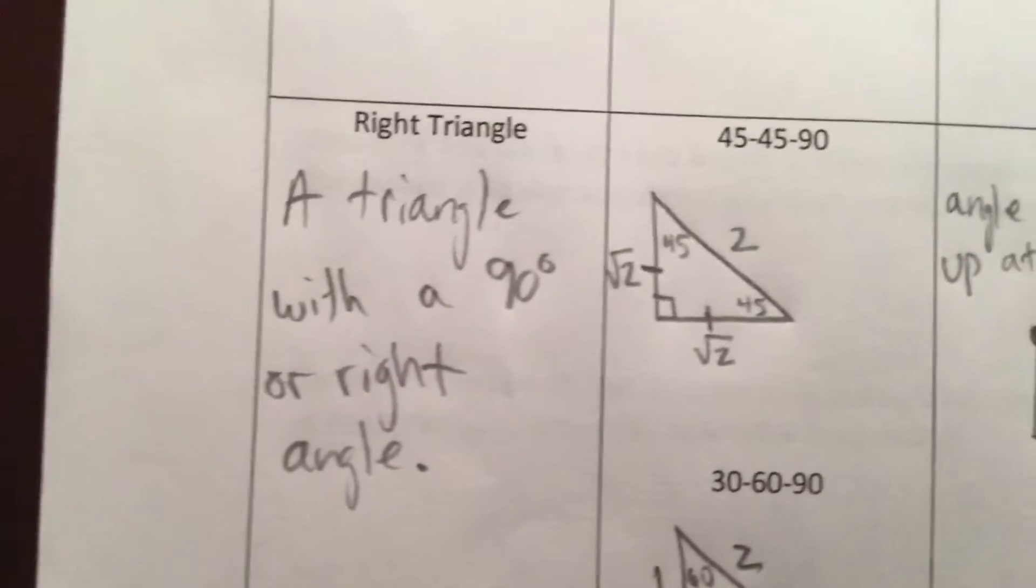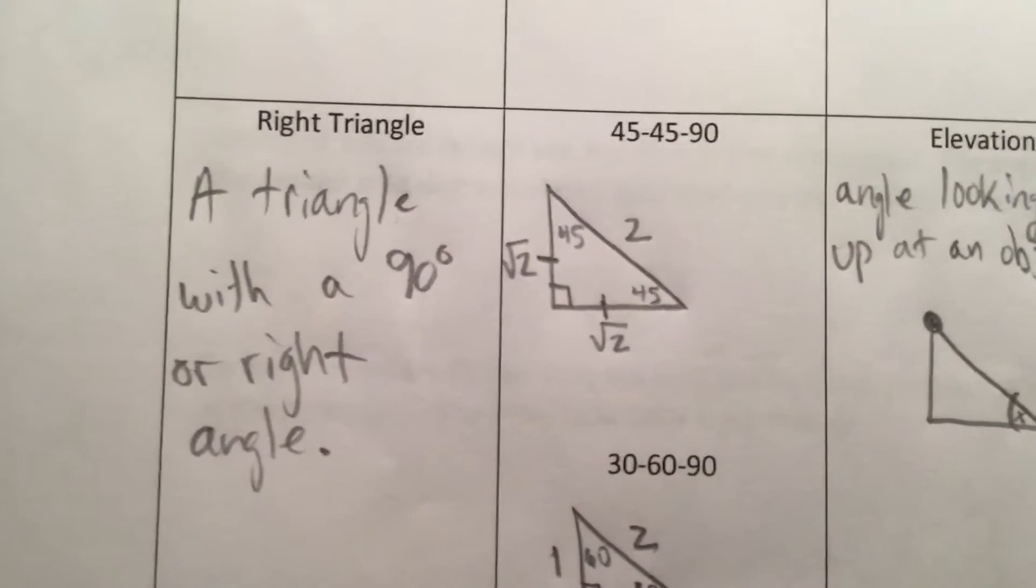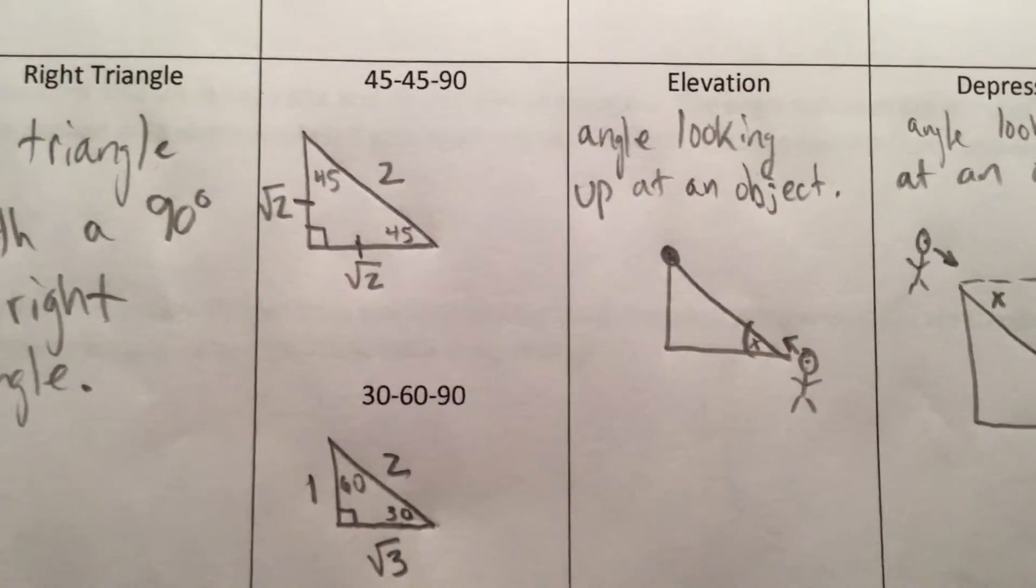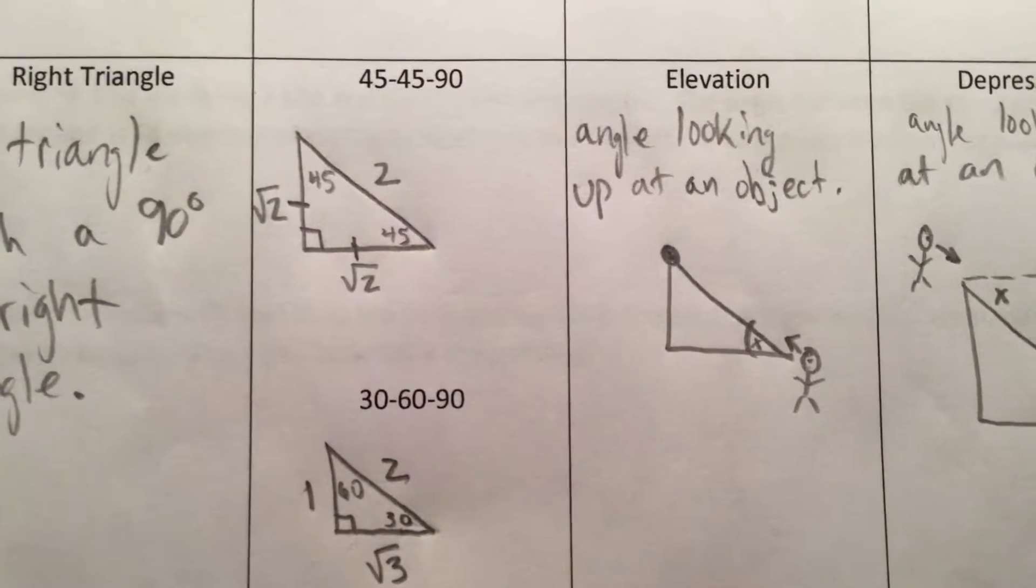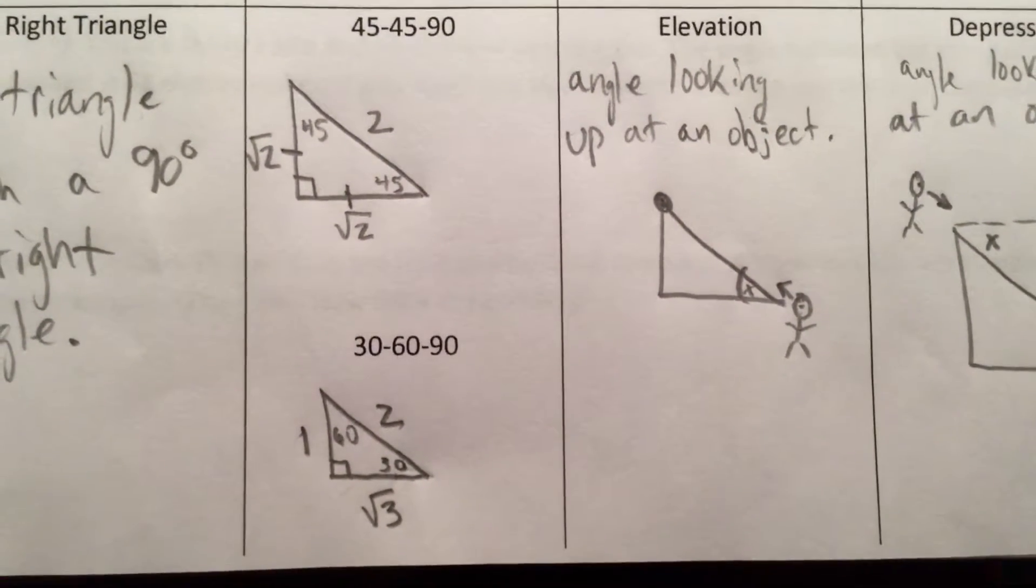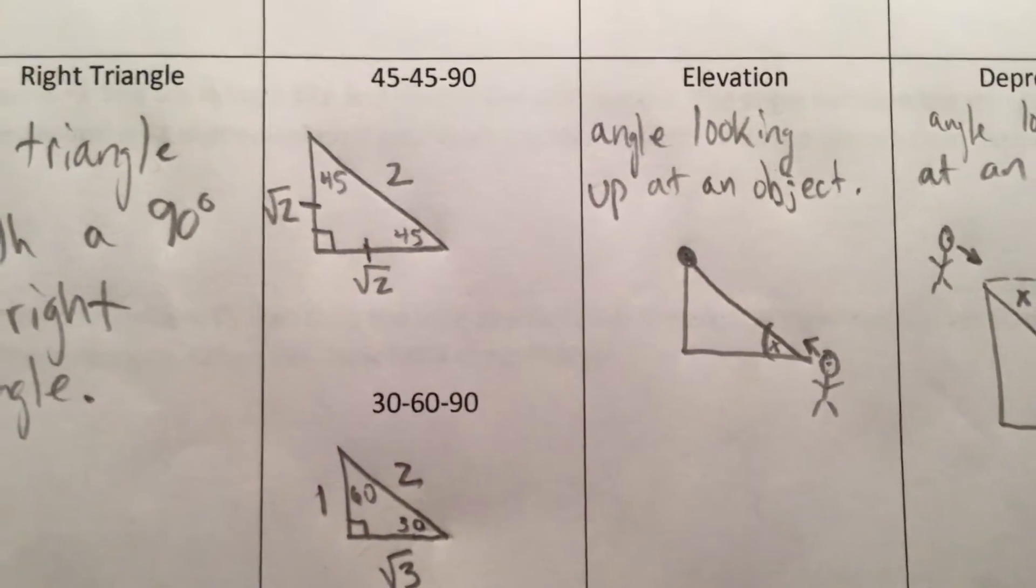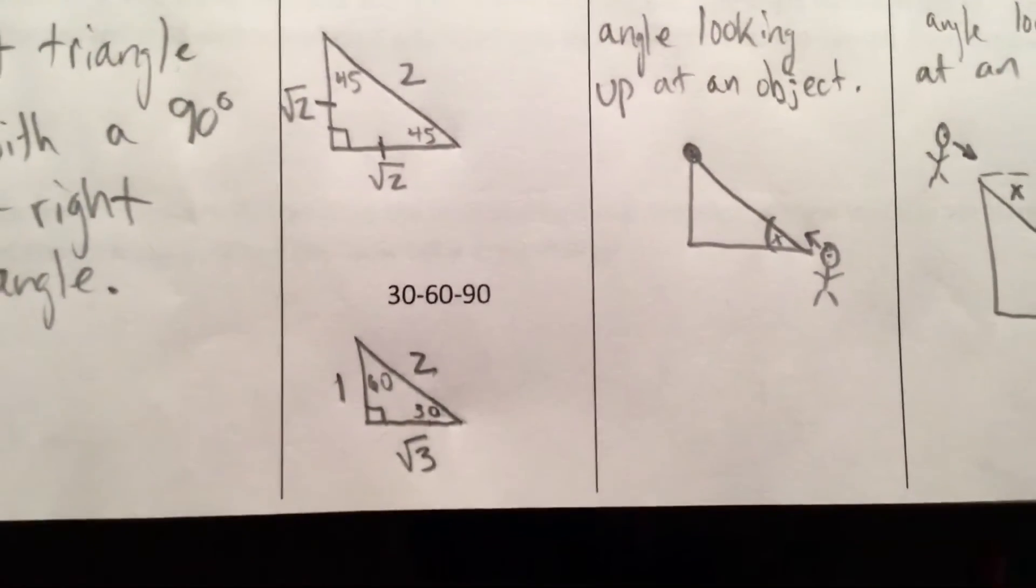A right triangle is any triangle with a 90 degree or right angle. The special right triangles: 45-45-90 has a ratio of √2 : √2 : 2 opposite the three sides, and 30-60-90 has a 1 : √3 : 2 ratio.